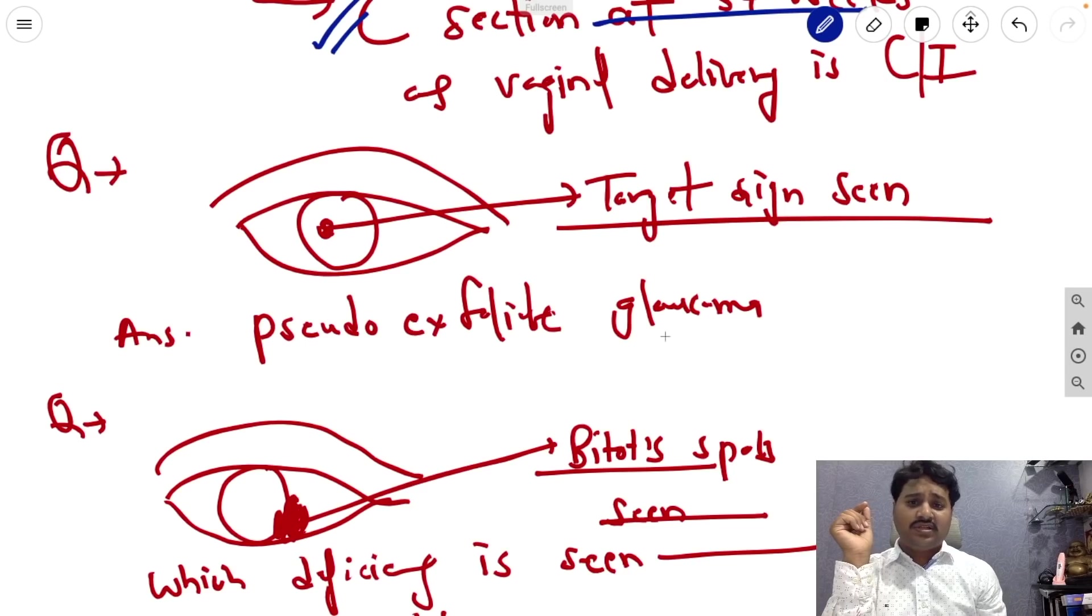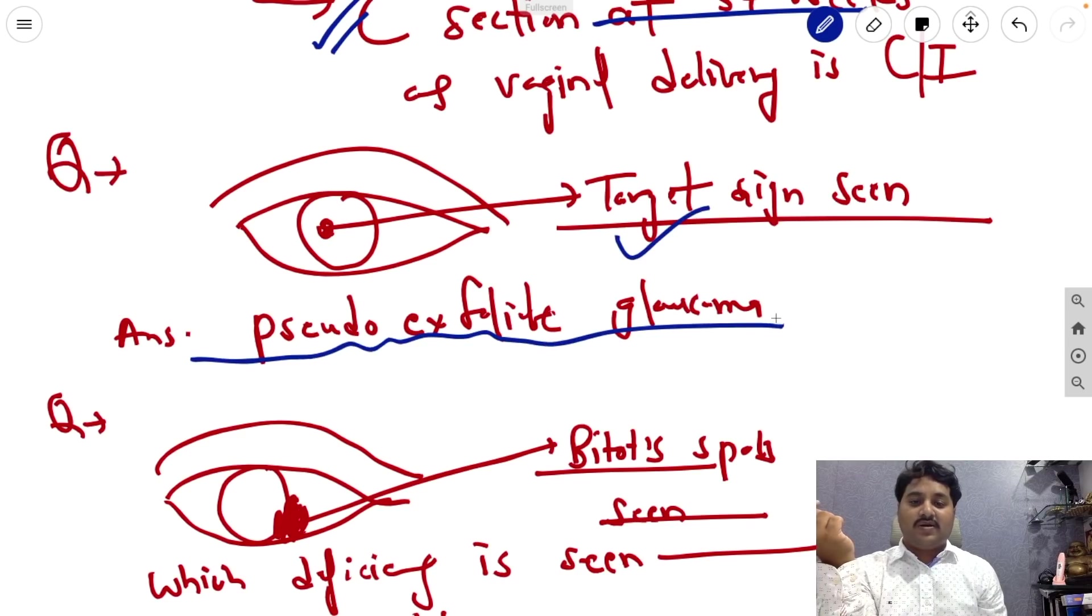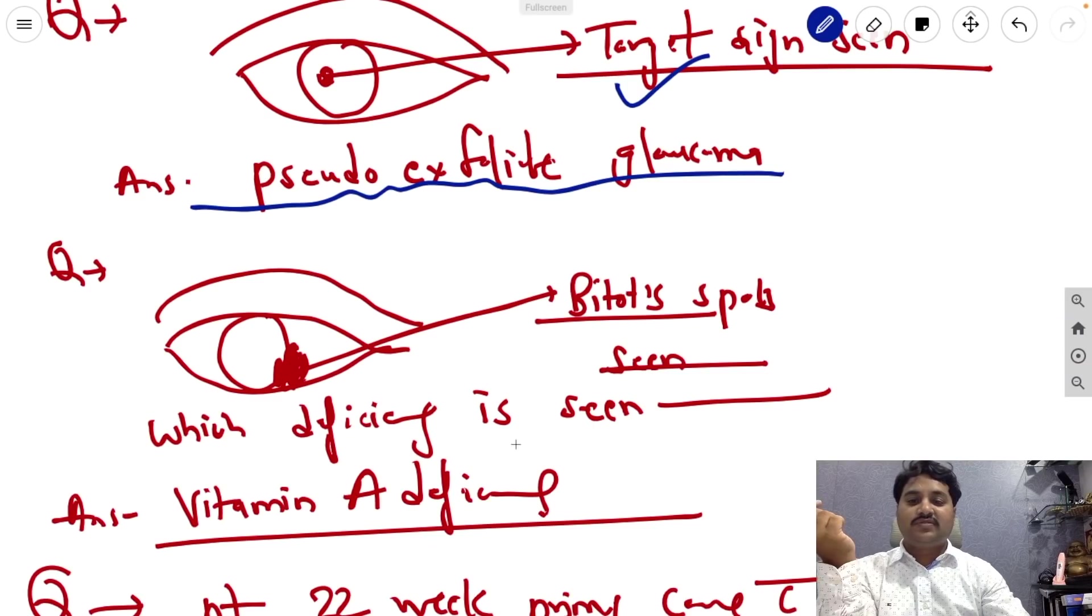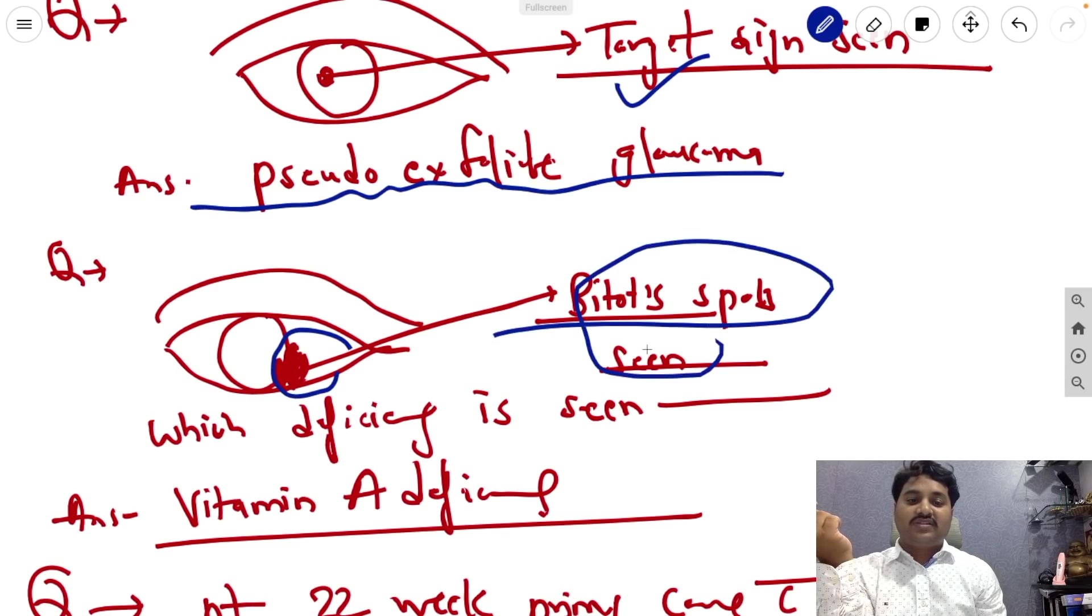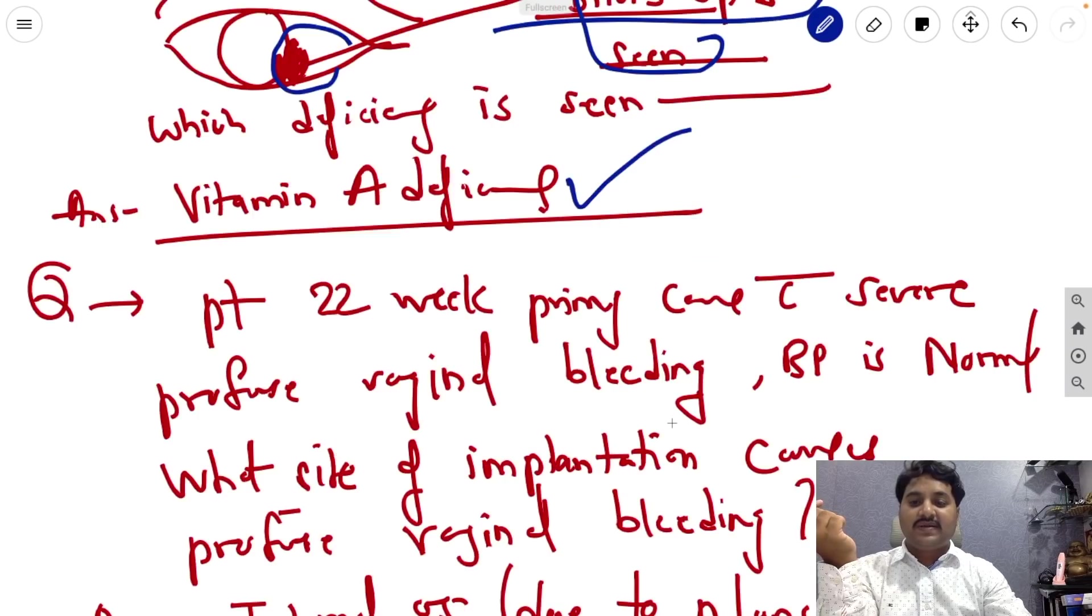Next question, this type of image, let me just try to draw a similar type of image in which target sign is seen. So that is indicative of pseudo-exfoliative glaucoma. Next question, here some of the material is deposited. This time the image is seen in which such type of material is deposited, which is commonly called Bitot spot, which is seen in which type of deficiency? So the answer is vitamin A deficiency.